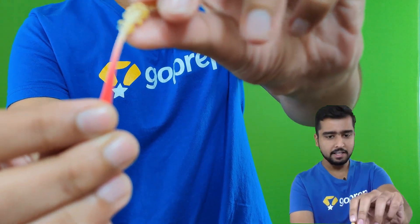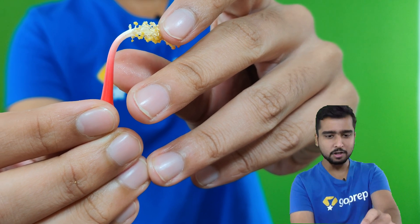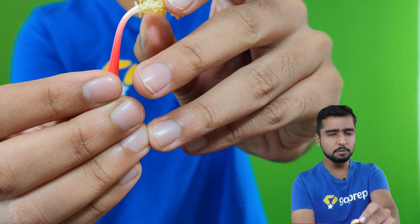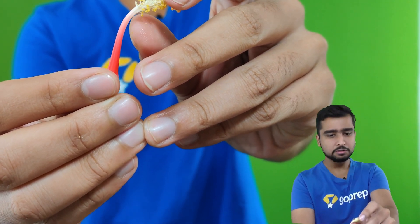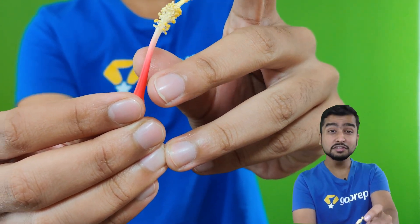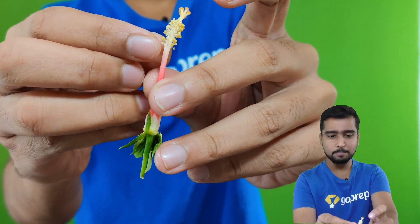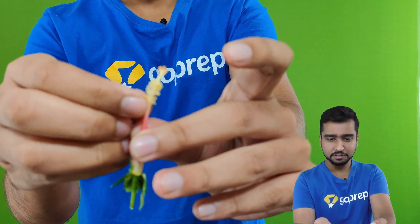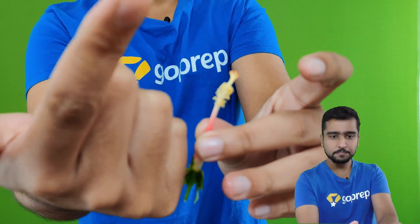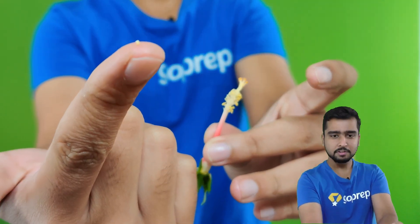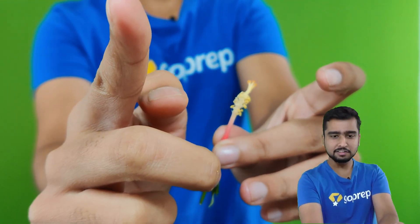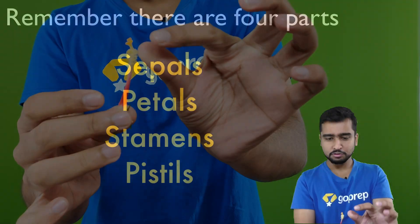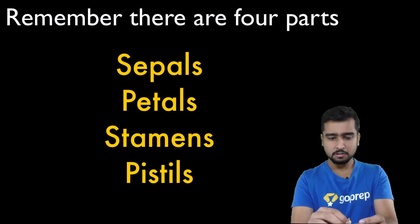Each stamen has an expanded structure at the end — a thick part — and a thin tube. That thin tube is the filament, and the expanded structure at the top is the anther. I'm going to pluck just one to show you. You can see these dots — those are anthers, little anthers.